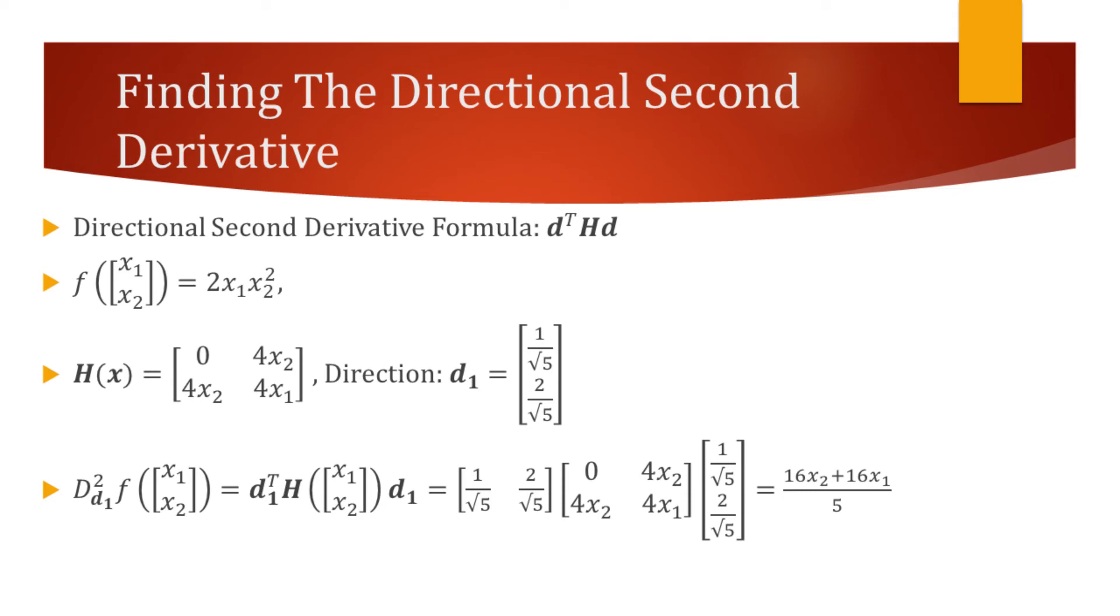For this problem, we are given the Hessian matrix, and we will try to find the directional second derivative in the direction given by the unit vector D₁.